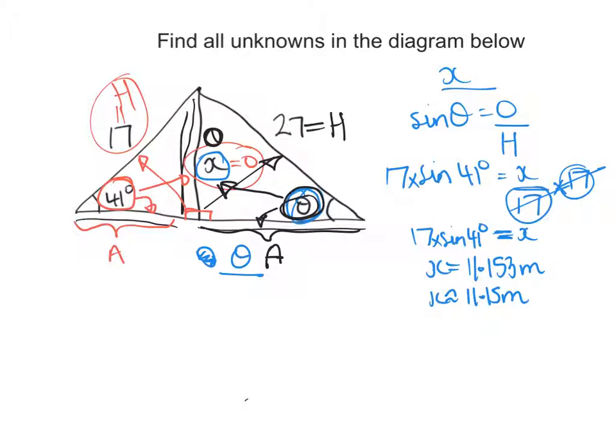Now I need to work out theta and I know the opposite side. I just worked that out. That'll be x and the hypotenuse is 27. So that'll be sine of theta is equal to the opposite divided by the hypotenuse. The opposite I do know, I just worked it out before. I'll use 11.153 divided by the hypotenuse, which is 27.